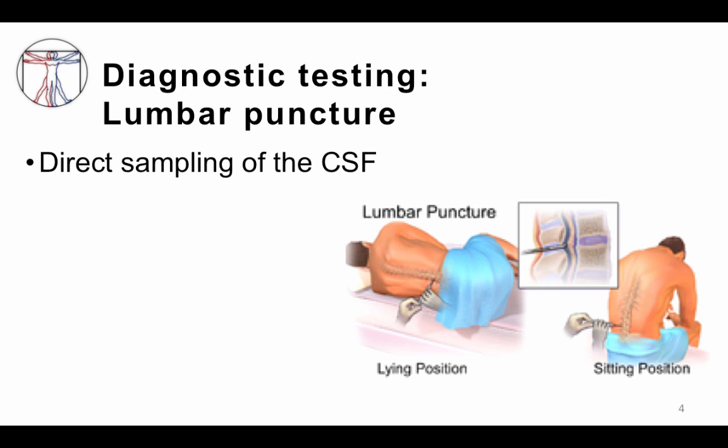Let's start off by talking about the lumbar puncture, which is one of the key tests used to make the diagnosis of meningitis. The lumbar puncture allows us to safely directly sample cerebral spinal fluid, which can show us evidence of infection and inflammation. Sampling is done by putting the patient in a reclined position — although sometimes it's also done in the sitting position — and a hollow needle is injected into the subarachnoid space where cerebral spinal fluid is aspirated.